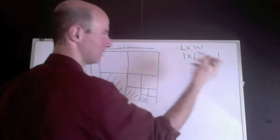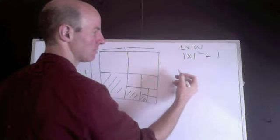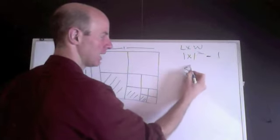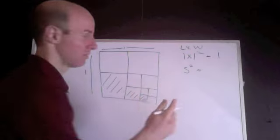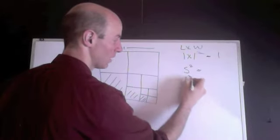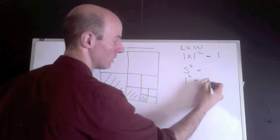And we could also think of this, since it is a square, sometimes we'd use the formula side squared, since we're dealing with a square and the sides are the same, so this would be 1 squared equals 1.